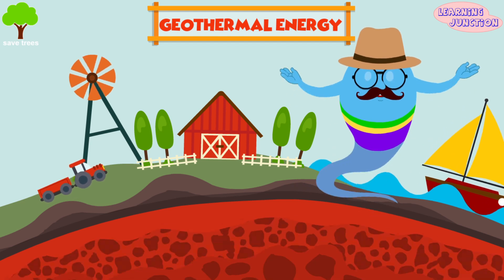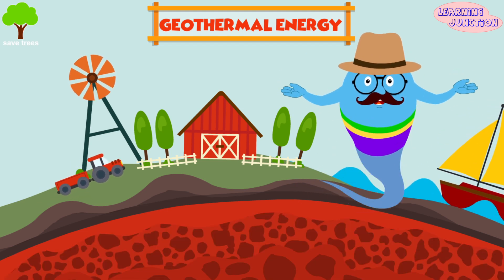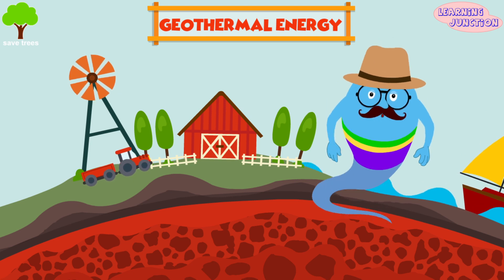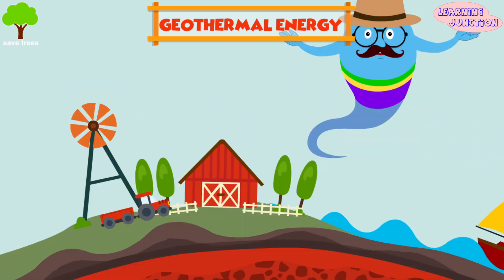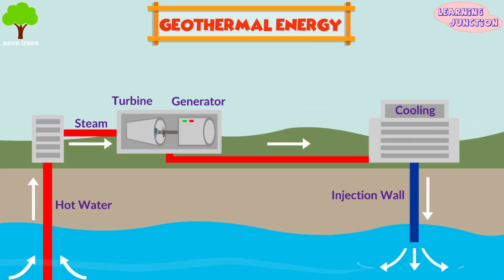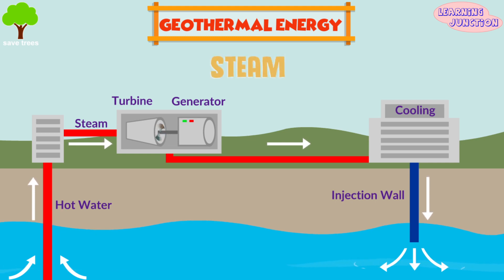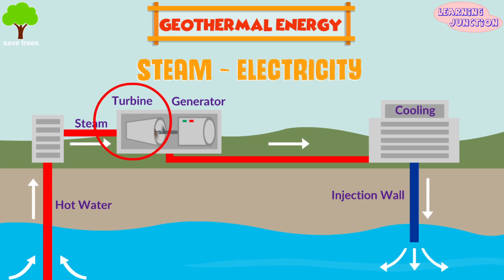Geothermal energy refers to the heat and electricity produced by using the heat from the Earth's interior. Groundwater in some areas absorbs heat from the rocks and becomes very hot. When it rises to the Earth's surface, it turns into steam, which is used to drive turbines that generate electricity.